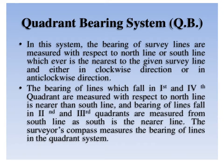This slide refers to the quadrantal bearing system. In this system, the bearing of survey lines are measured with respect to the north or south line, whichever is nearest to the given survey line, and measured either in the clockwise direction or in the anticlockwise direction. The bearing of lines which fall in the 1st and 4th quadrant are measured with respect to the north line, and bearing of lines in the 2nd and 3rd quadrant are measured from the south line. We are going to make use of a surveyor's compass for recording the quadrantal bearing system.